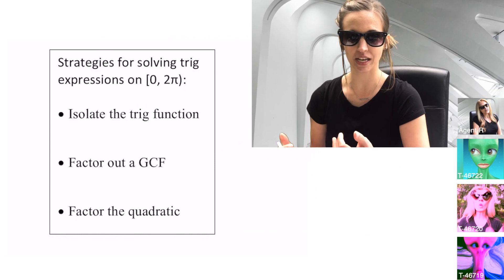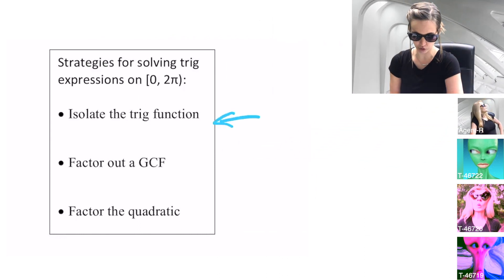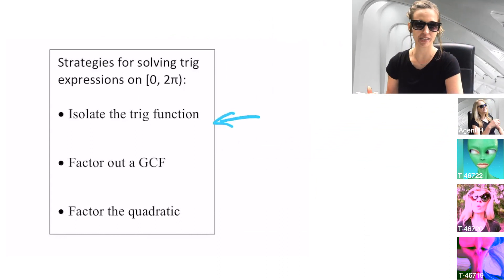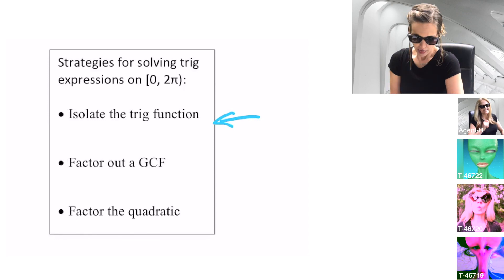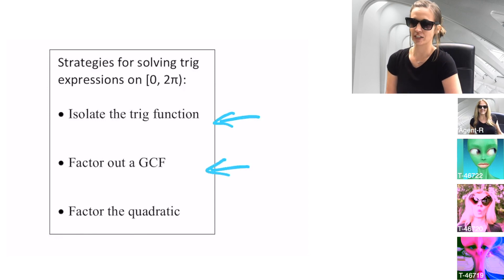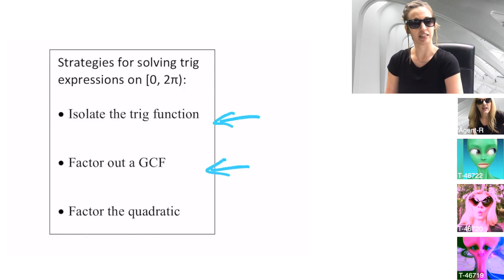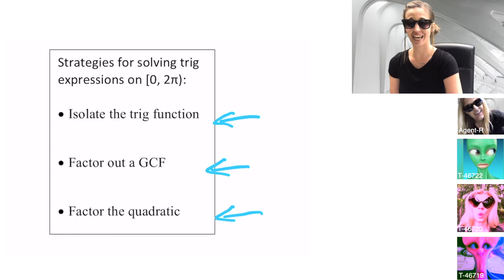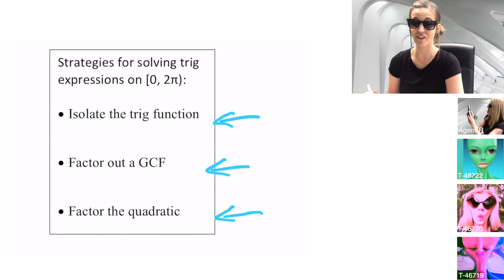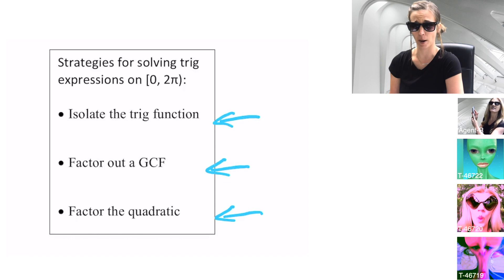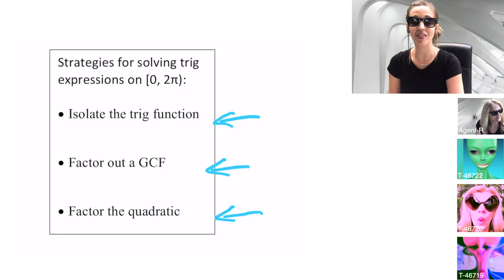Trainees, it may be good to review the strategies we've learned so far with these equations. For the first equation, it was just like a linear equation, so our big goal was to isolate the trig function. We use that in almost all of these when we're trying to solve. Then we also saw one where we had to factor out the GCF. And finally we saw a quadratic where we had to use the guess and check method or the bottoms up method to factor, and then use zero product property to solve. These will be our three methods for solving trig equations.